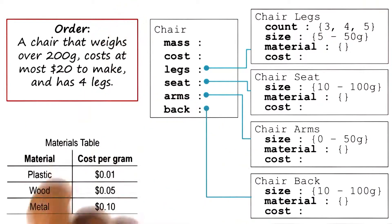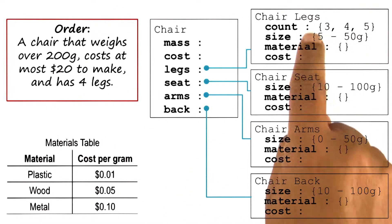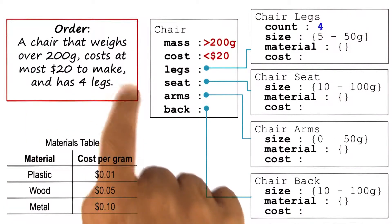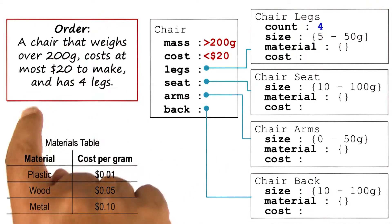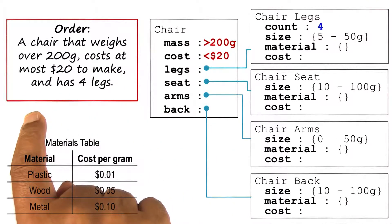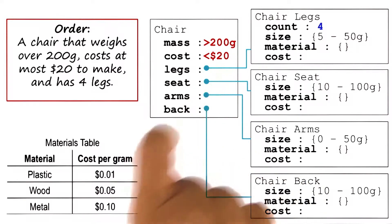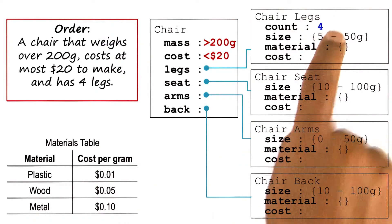Given the specification, what configuration process can use this knowledge to fill in the values of all the variables to satisfy the specification? So the first thing the process might do is to write down all the constraints that are given as part of the input specification. So the mass is greater than 200 grams, the cost is less than $20, and the count of legs is four.